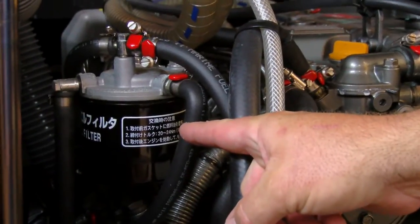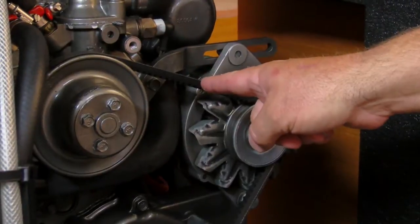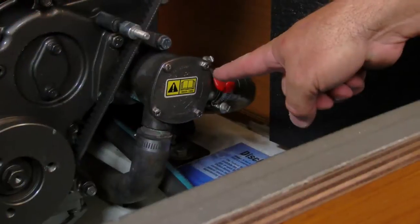Here we have good access to our engine room via underneath the stairs, which lift up. We have our fuel filter over here, a belt, and our raw water impeller.